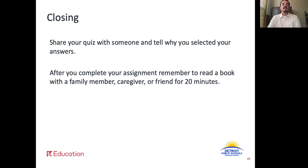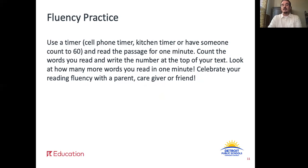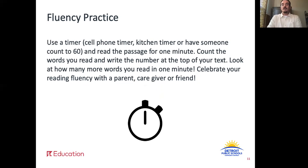Alright, great job today. Share your quiz with someone and tell why you selected your answers. Also, remember to read a book today with a family member, caregiver, or friend for 20 minutes. For today's fluency practice, use a timer — a cell phone timer, kitchen timer, or have someone count to 60 — and read the passage for one minute. Count the words you read and write the number at the top of your text. Look at how many more words you read in one minute. Celebrate your reading fluency with a parent, caregiver, or friend. Thanks for learning with me today. I will see you back here for Lesson 38.